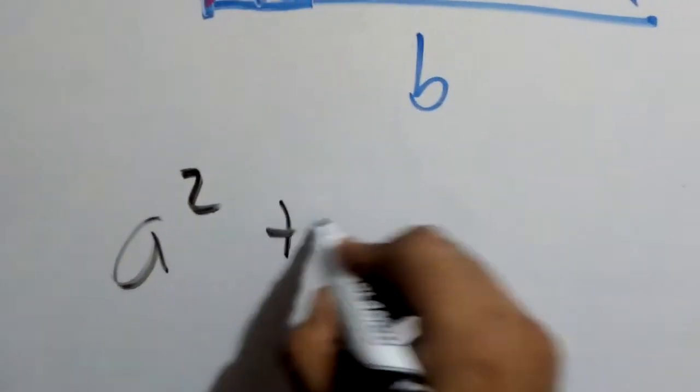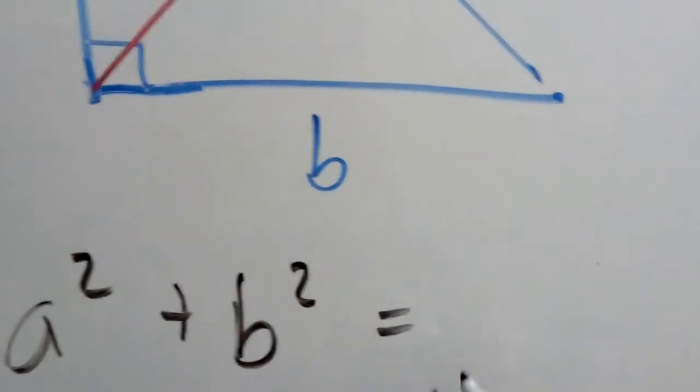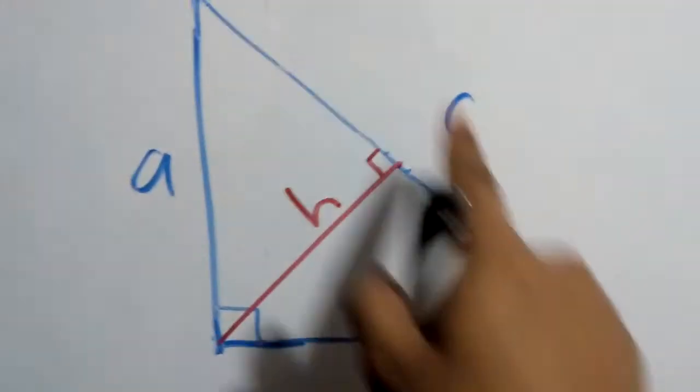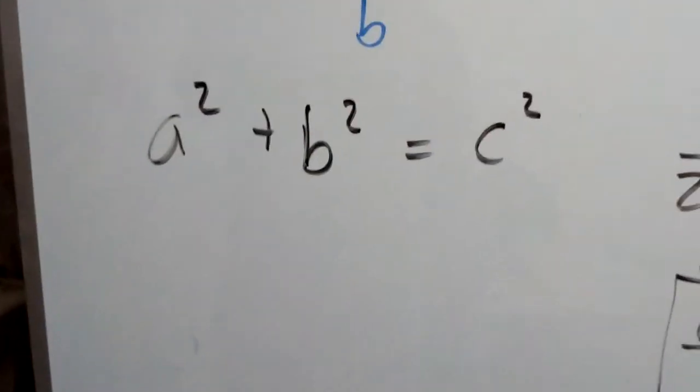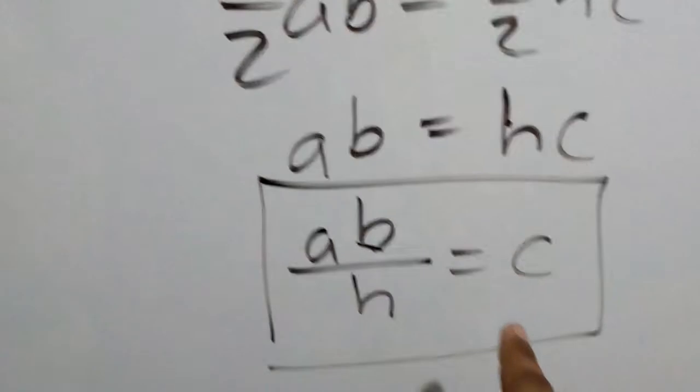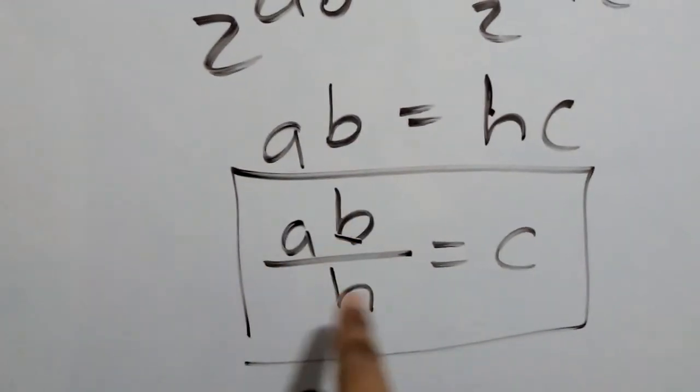Now let's move this side because now we are going to consider the famous Pythagorean theorem. You know, the squares of the legs equal the square of the hypotenuse. These are the legs, this is the hypotenuse, the opposite to the right angle. So now you have the Pythagorean theorem, but you have an expression for c. Can you see? This is c: ab over h.